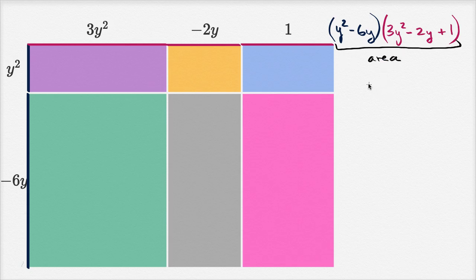Now there's another way to do it. A big clue is that we subdivided the big rectangle into these six smaller rectangles, and we have the dimensions for each of them. So we could find the area for each of these and then add them all together.